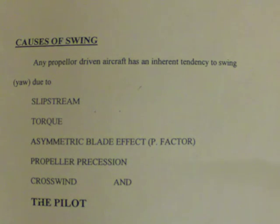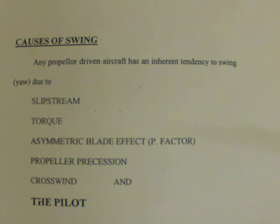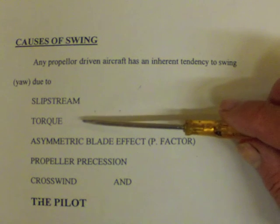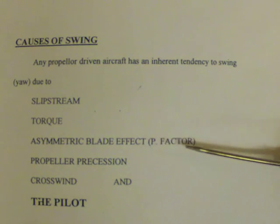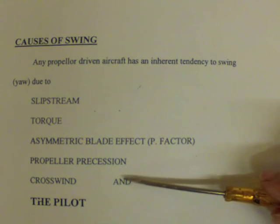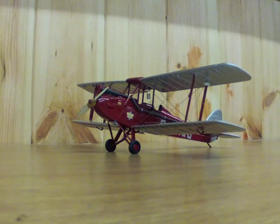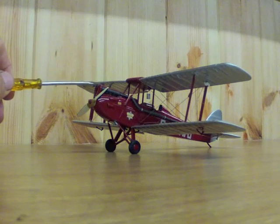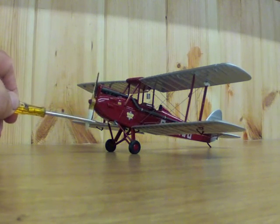Any propeller driven aircraft has a propensity to yaw during the take-off roll. Let's recap those causes — they have particular relevance with respect to a tail dragging aircraft. The various forces causing a swing include: slipstream, torque, asymmetric blade effect (or what the Americans call P-factor), propeller precession, crosswind, and the pilot. The MOF's gypsy engines are what's called left-hand tractor propellers, meaning the top of the propeller swings to the left in the direction of travel.